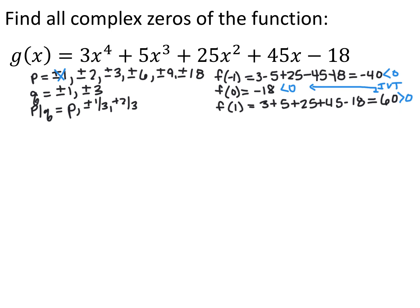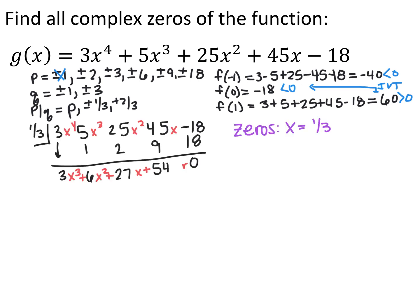My possible rational zeros are all p's divided by all q's. Dividing by 1 gives my p's again; dividing by 3 gives 1 third, 2 thirds, and others already listed. I tried negative 1, 0, and 1. Plugging in negative 1 gave negative 40, plugging in 0 gave negative 18, and plugging in 1 gave 60. Neither 1 nor negative 1 worked, but by the intermediate value theorem there's a zero between x equals 0 and x equals 1. I tried 1 third because f of 0 was closer to 0 than f of 1. I performed synthetic division and ended up with a remainder of 0, so one zero is x equals 1 third.